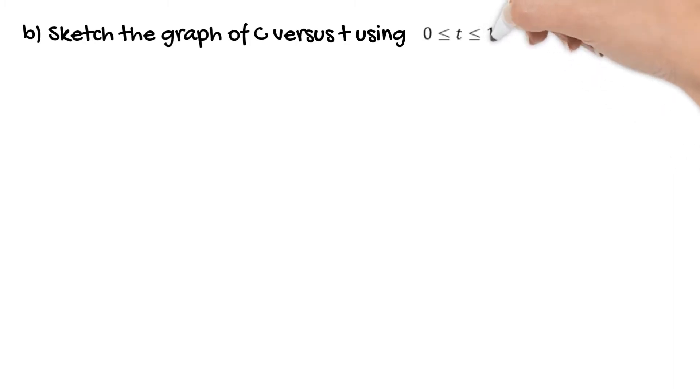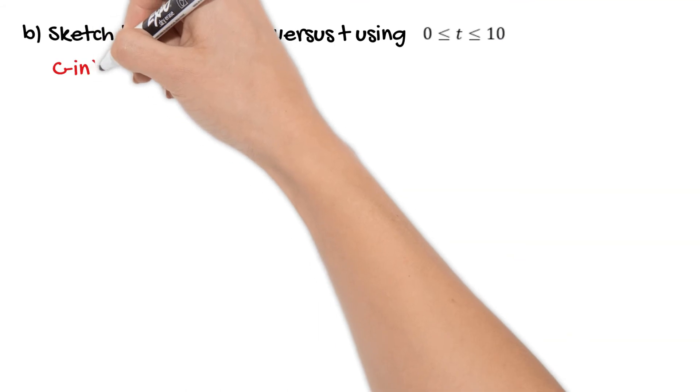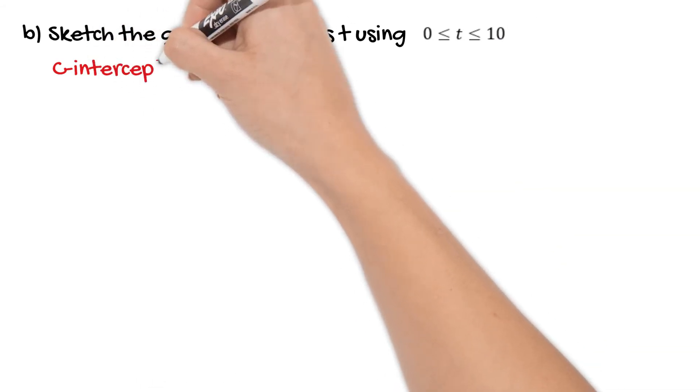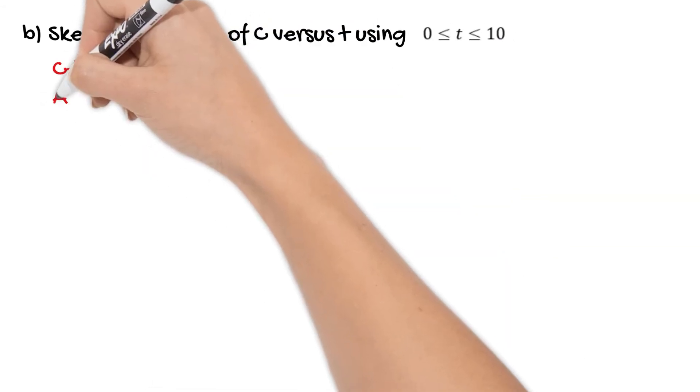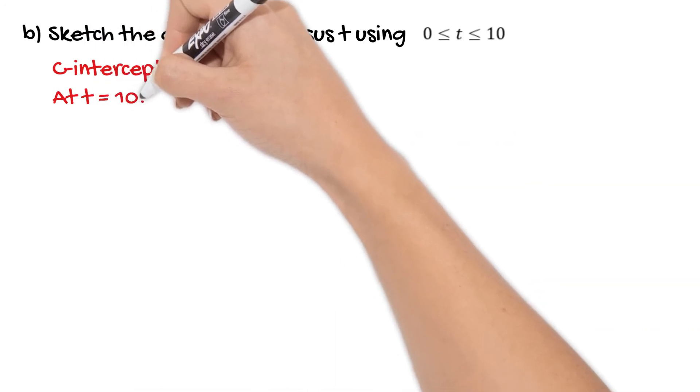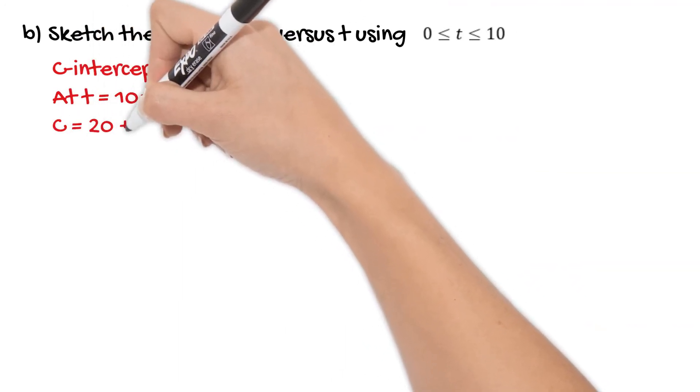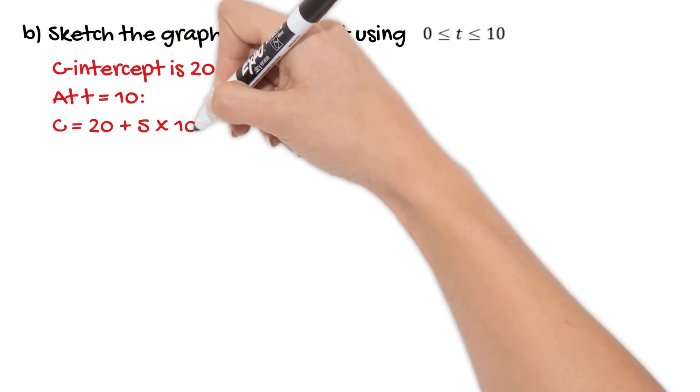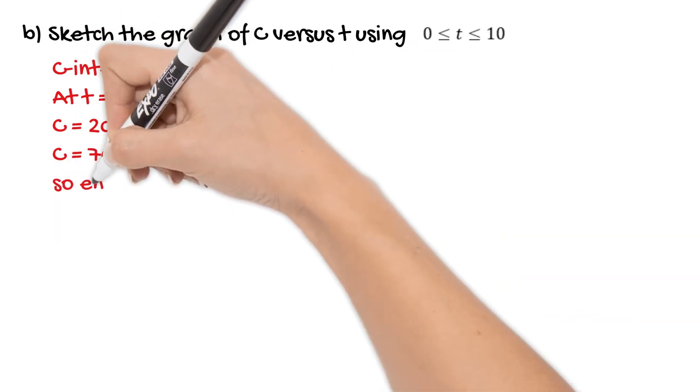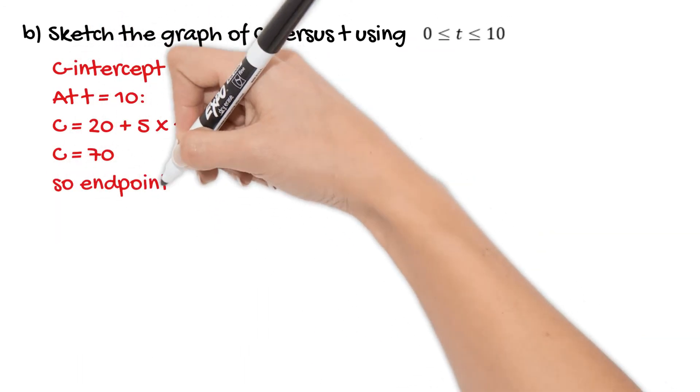Because we've been given an upper T limit for this graph, we'll sub that into our rule to find the other endpoint. So at T = 10, C is going to equal 20 + 5 × 10, which gives us a cost of $70.